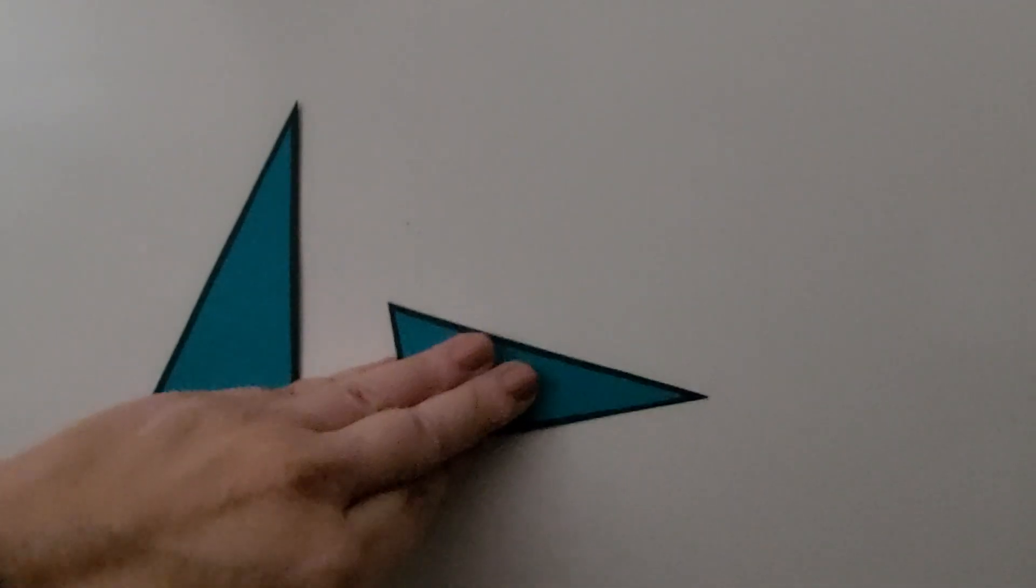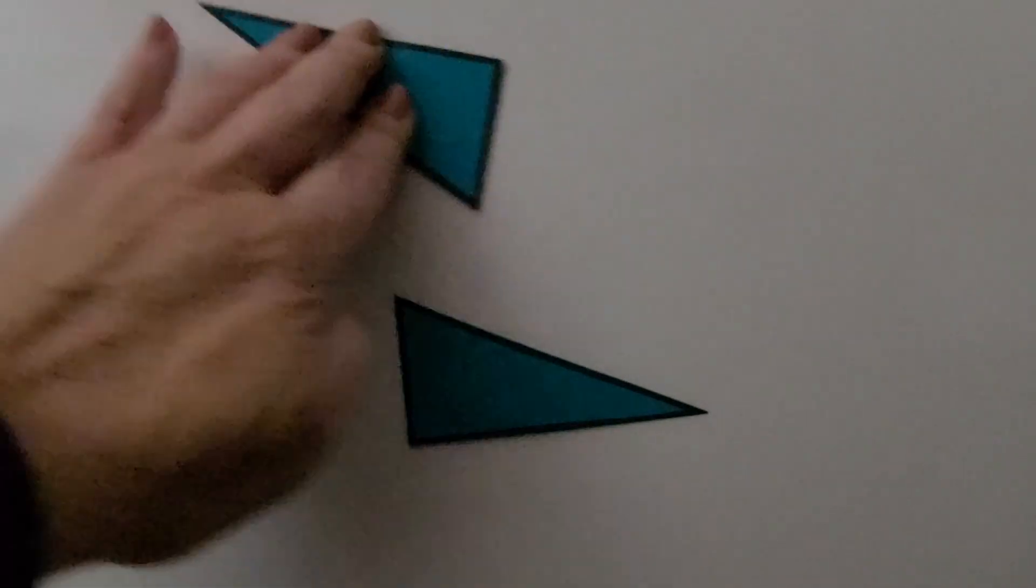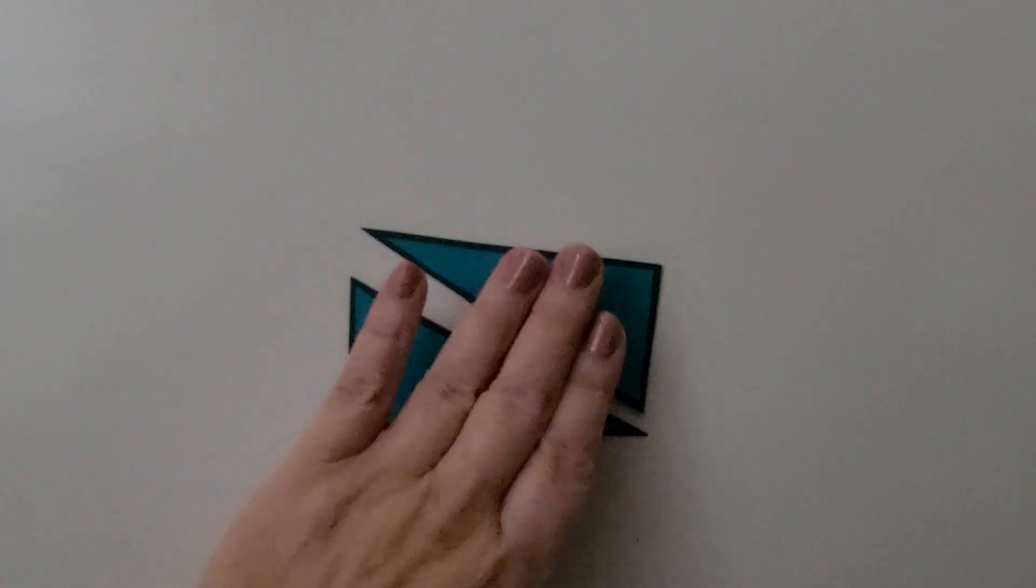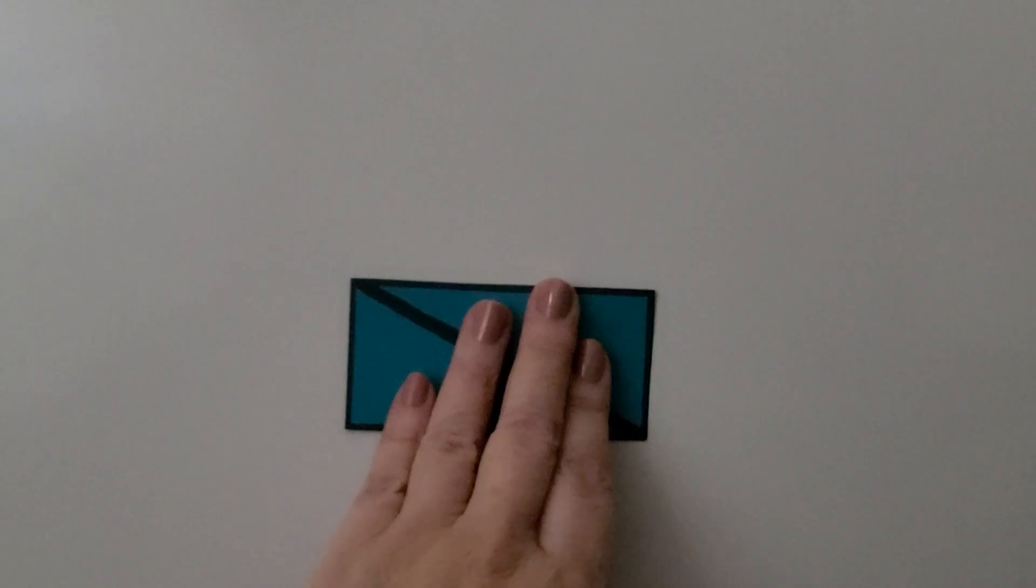If I put this one like this, I can turn this one and put them together like that and we can make a rectangle. We needed to spin them around to make the rectangle.